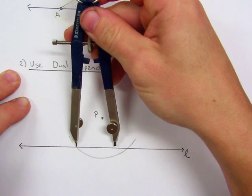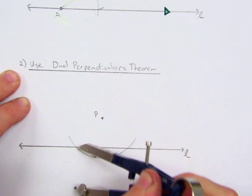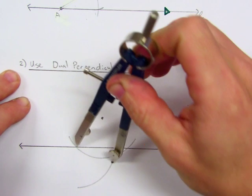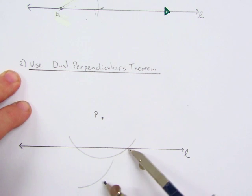Then we make sure the compass width is a little more than half between those two intersections. And using the same measure, we do it from the other intersection as well.